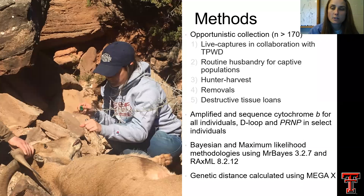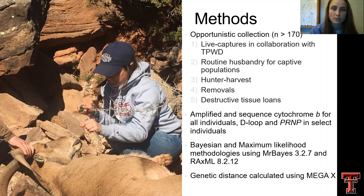We collected over 170 samples through a variety of methods: live captures with Texas Parks and Wildlife Department, routine animal husbandry through Fossil Rim Wildlife Center, hunter harvest removals, and destructive tissue loans through natural history collections. We also amplified and sequenced cytochrome B, D-loop, and PRNP, used a couple different phylogenetic methods, and finally calculated genetic distance values.